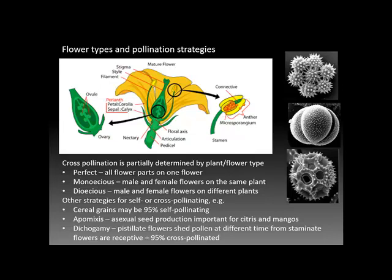Going back now to flower types, species have a number of different strategies built into them for either maintaining self-pollination or enforcing cross-pollination. The first case is a perfect flower, which we're going to be dissecting. That's one that has both male and female parts — stamens, petals, and sepals — all on the same flower. The classic case is the lily pictured in this example.